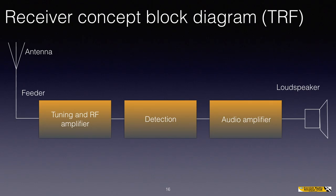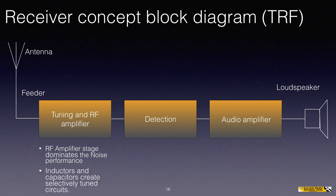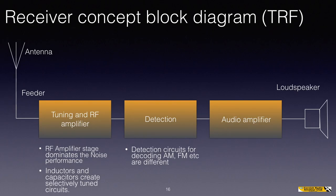Moving on beyond what we need to know, let's make some notes about the various blocks. The RF amplifier stage dominates the noise performance of the receiver — so the better the quality of the first amplifier, the better the quality of the receiver in terms of its noise performance. The tuned circuit is made up of inductors and capacitors; the combination of these creates selectively tuned circuits — covered more in the intermediate and advanced courses. The detection circuits for decoding AM, FM, etc. are different, so an AM demodulator is different from that for an FM signal.